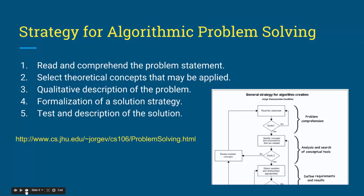Your book mentions a resource that goes through a similar problem-solving process for computer science, especially focused on algorithmic and coding problems. The five steps are: first, read and understand the problem statement; second, select theoretical concepts that may be applied; third, qualitative description of the problem; fourth, formalization of a solution strategy; and fifth, test and describe the solution. This resource is structured as a flowchart with guiding questions at each stage to help students know whether they've completed each step.